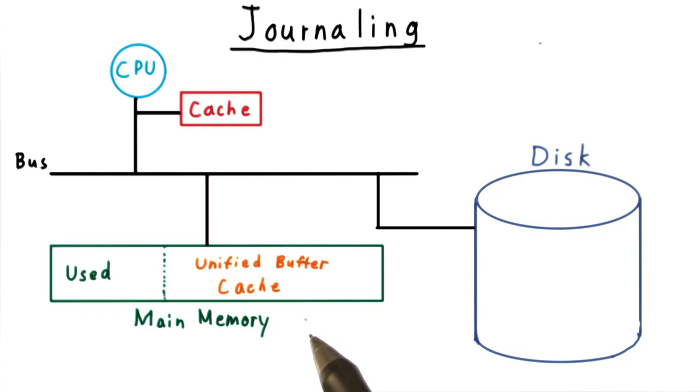There are some dangers that come with the write-back policy of the buffer cache. A sudden system crash or power failure would mean that all the changes made in memory only would be lost.